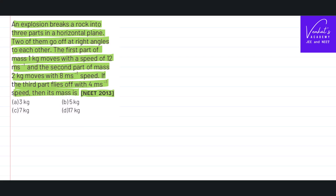Let's understand what is given in the problem. An explosion — the rock was initially in the state of rest — breaks it into three fragments. Two parts moved perpendicular to each other. So if the total mass is m, it was divided as m1, m2, and m3. This is how the third part moves. m1 is given as 1 kilogram moving with a velocity of 12 meter per second.